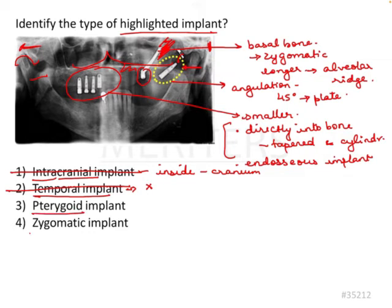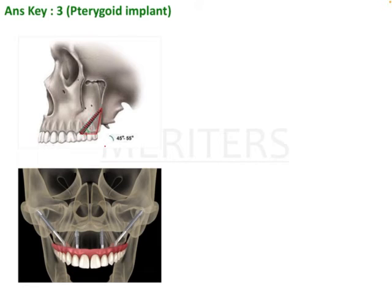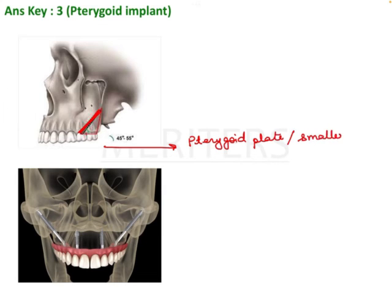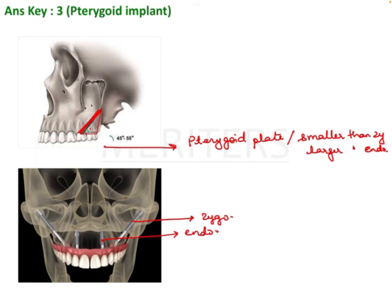The next two options are pterygoid implant and zygomatic implant, which are both confusing options given their designs. So let's have a look at the designs. The pterygoid implant is angled at 45 degrees and goes into the pterygoid plate. It is smaller compared to the zygomatic implant and larger than conventional endosseous implants. The zygomatic implant goes into the body of the zygoma. So in size: endosseous is smallest, followed by pterygoid, then zygomatic.